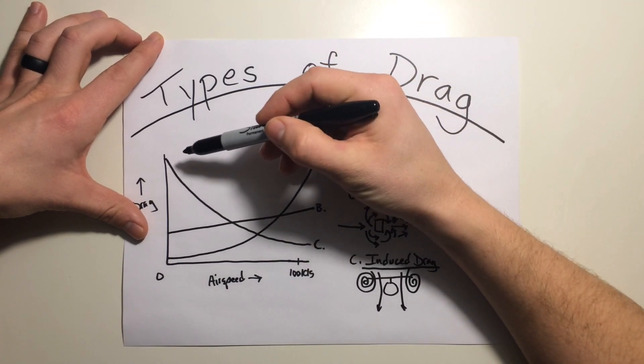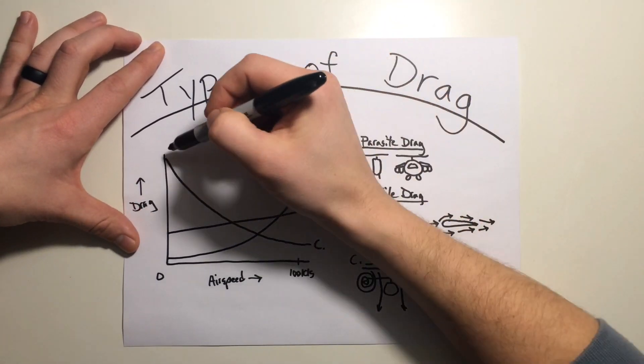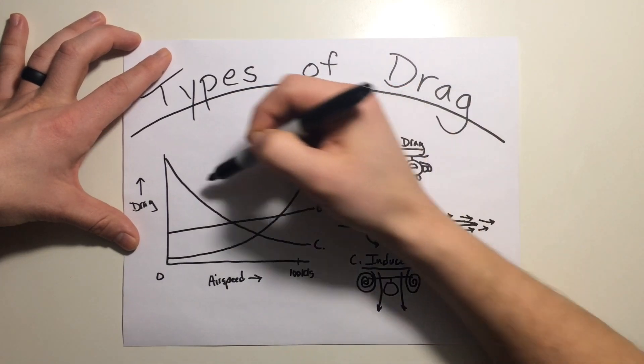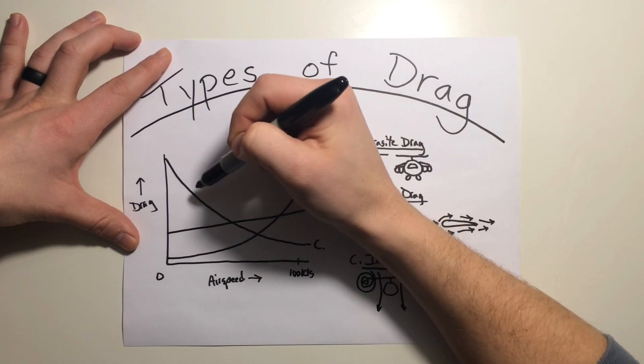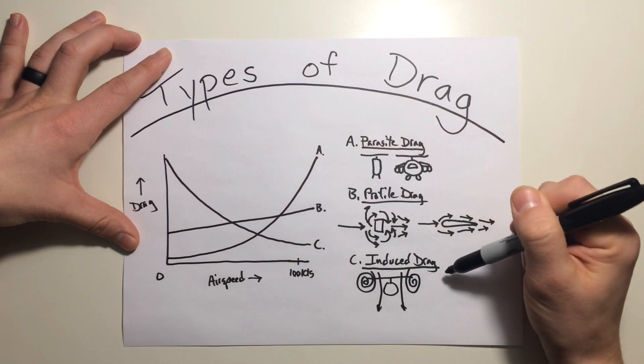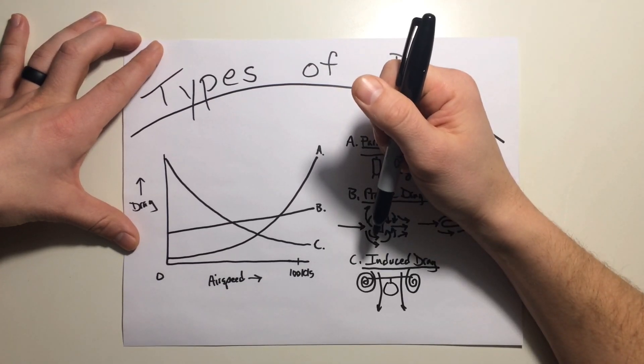As you start to increase faster, you get through effective translational lift, you start to outrun these vortices. And as you accelerate faster and faster in forward flight, your angle of attack is actually reducing a little bit more and more. So that's reducing that induced drag as you continue to fly faster and faster.